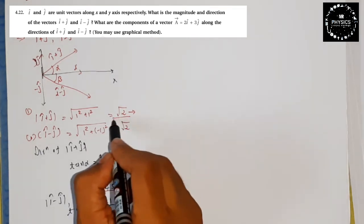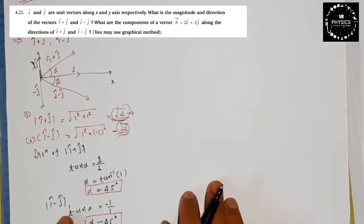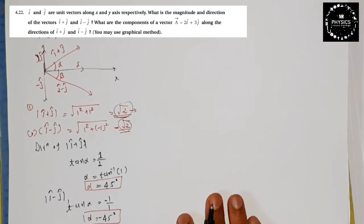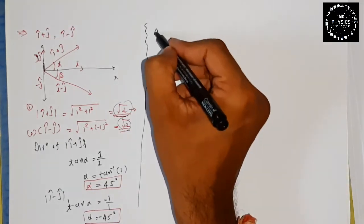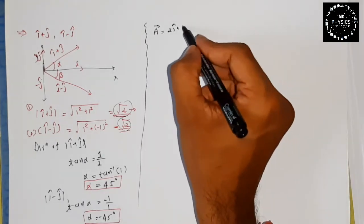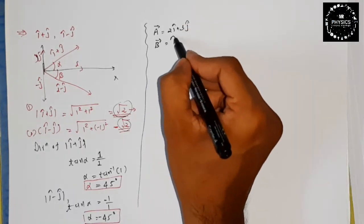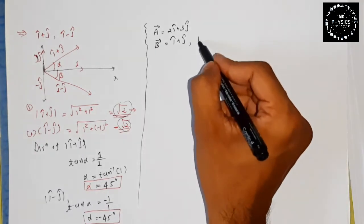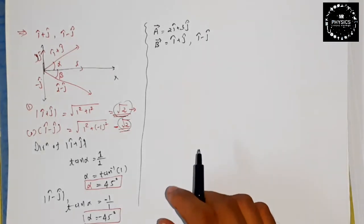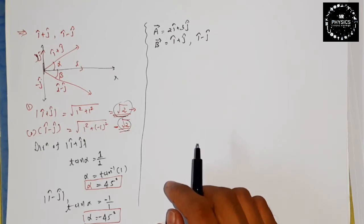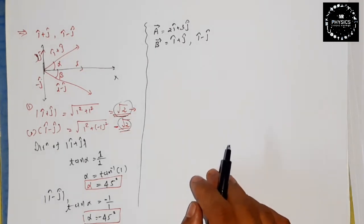Now, vector a = 2i-cap + 3j-cap. We will use vector b = (i+j) first, then (i-j). To find the component of a along b, we use the formula: a·b = ab·cos(θ). So the component a·cos(θ) = (vector a · vector b) / |b|.